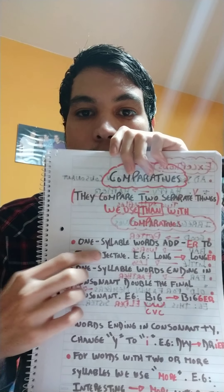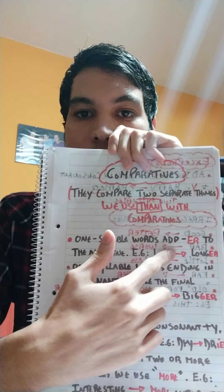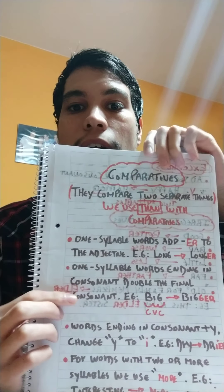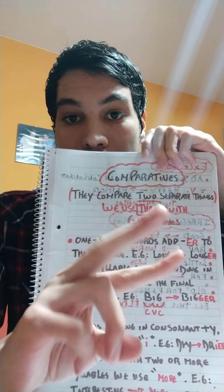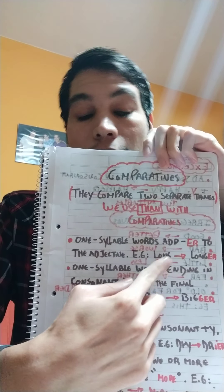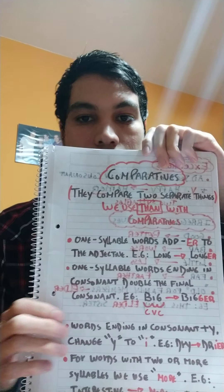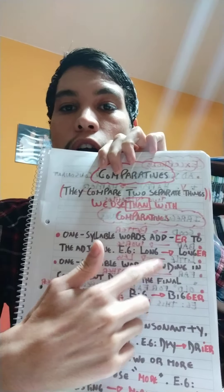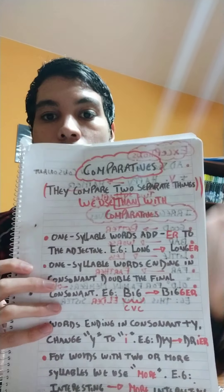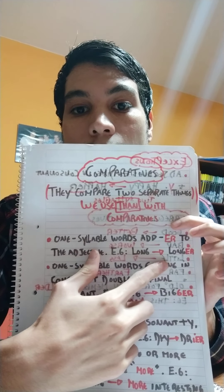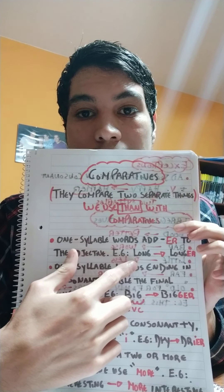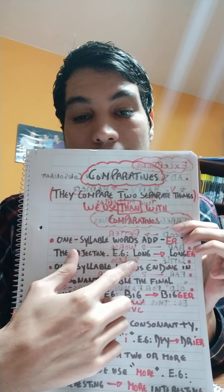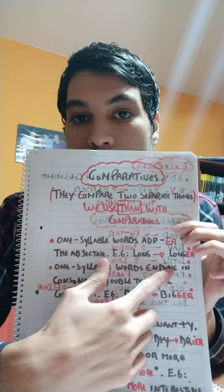One syllable words: add ER to the adjective. Las palabras de una sola sílaba agregan las dos letras ER a los adjetivos. For example, long → longer. That's a one syllable word, so we add ER: longer.